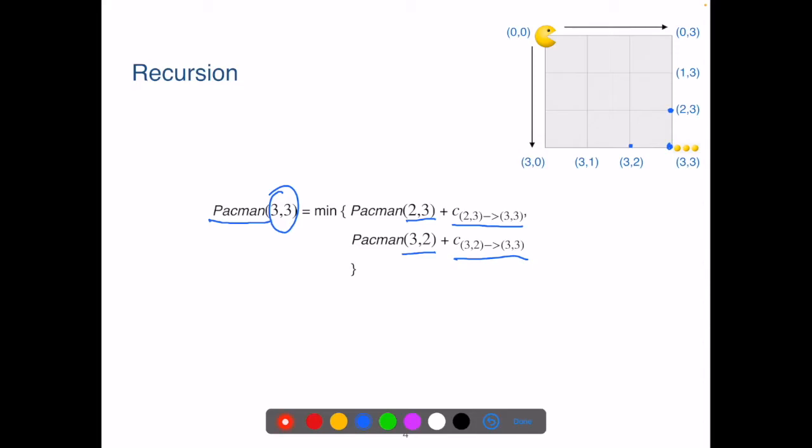Figuring this out is the defining step of dynamic programming. The rest will become much easier. Now there are some special cases as well. For Pac-Man to get to any position at the top edge or at the left edge, there is in fact only one option.